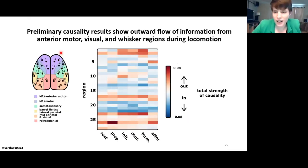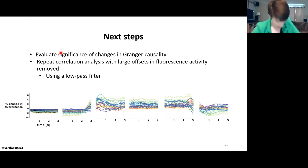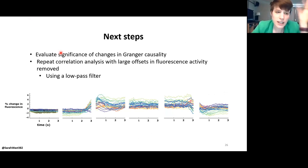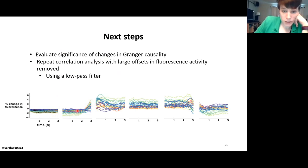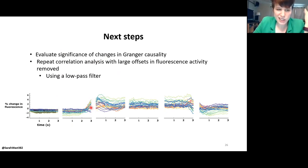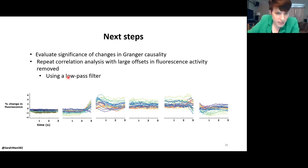My next steps are to calculate the significant changes of all these Granger causality measures — I have all my null distributions set up and just need to run the significance tests. I also want to repeat many of these correlation analyses without the large activity offset, because this huge increase in activity drives correlation values up. I'm interested in more subtle relationships within these increases. My next step is to filter out that large offset with a high-pass filter.